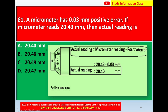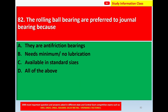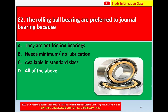Question number 82: Rolling ball bearings are preferred over plain bearings because — option A: they are anti-friction bearings, option B: they need minimum or no lubrication, option C: they are available in standard sizes, option D: all of the above. Correct answer is option D: all of the above.